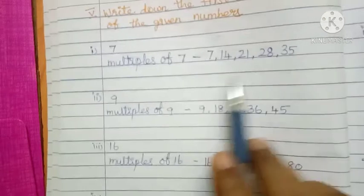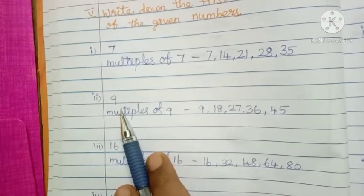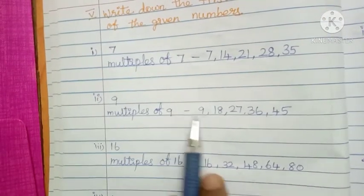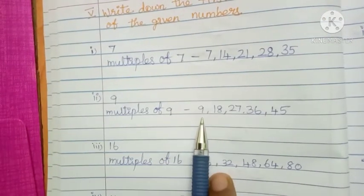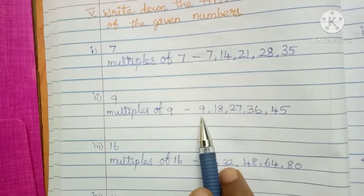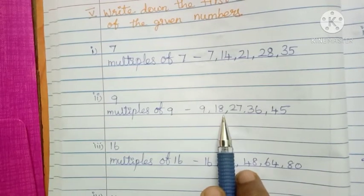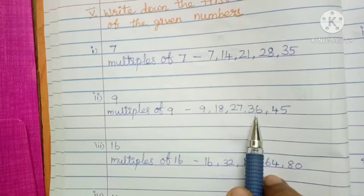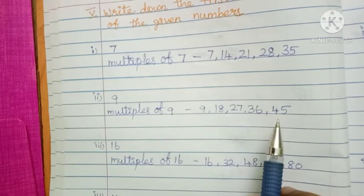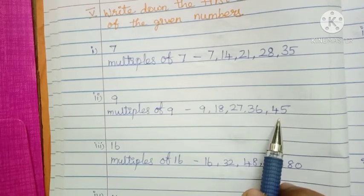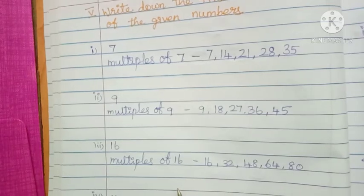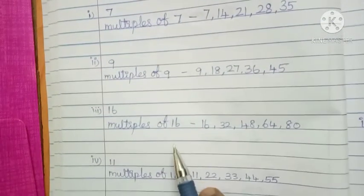The next one, number 9 — multiples of 9. You already know the tables, easy to write. 9, 1's are 9; 9, 2's are 18; 9, 3's are 27; 9, 4's are 36; 9, 5's are 45. Children, you learn the table only, do the sums — easy.